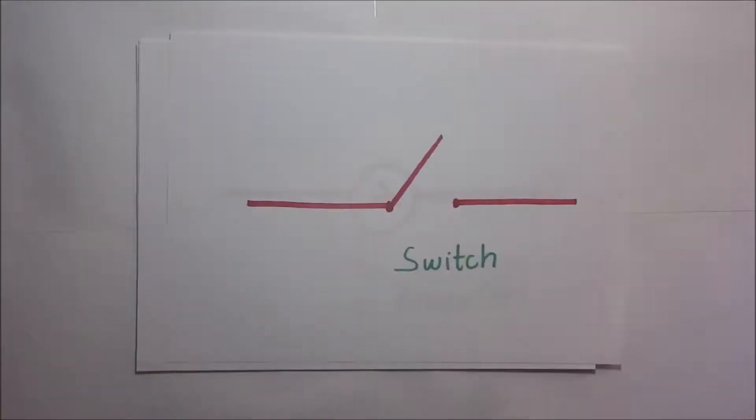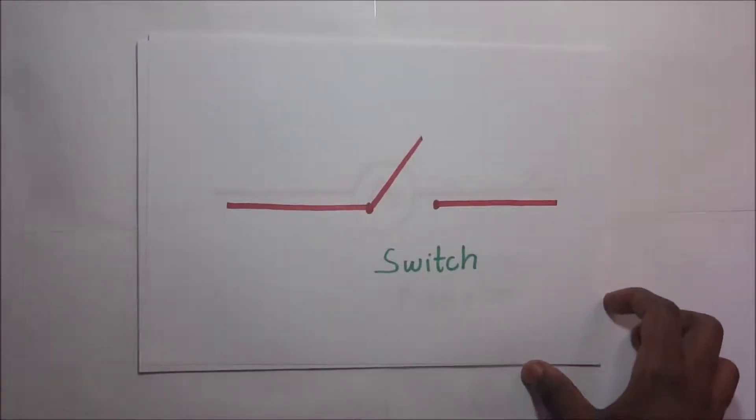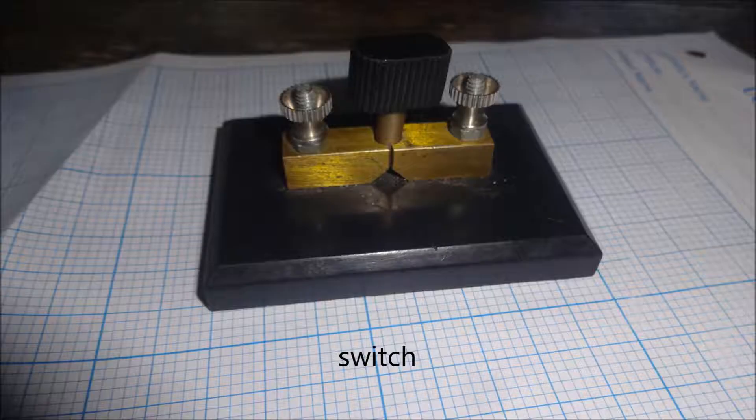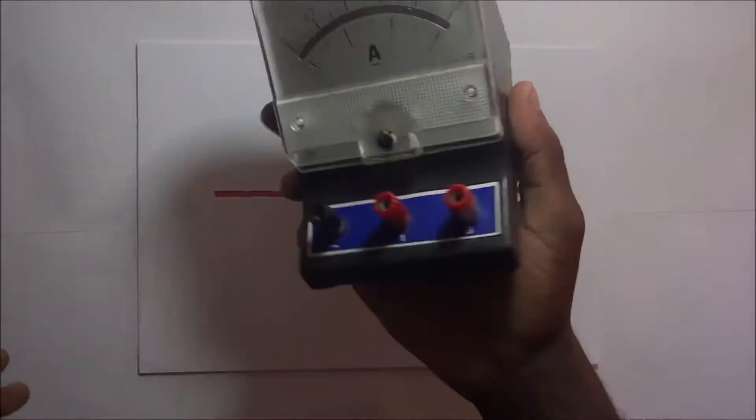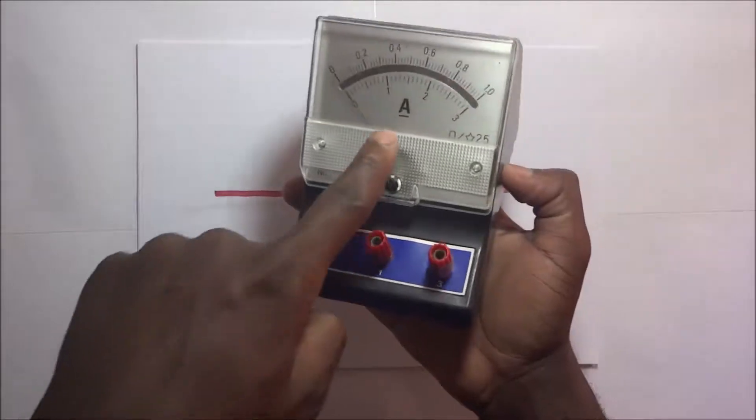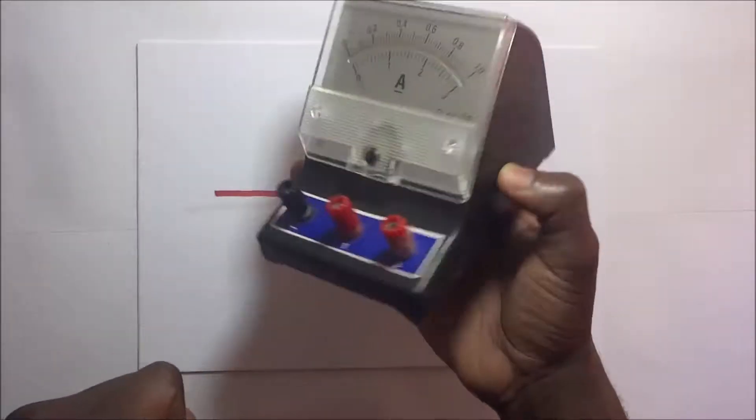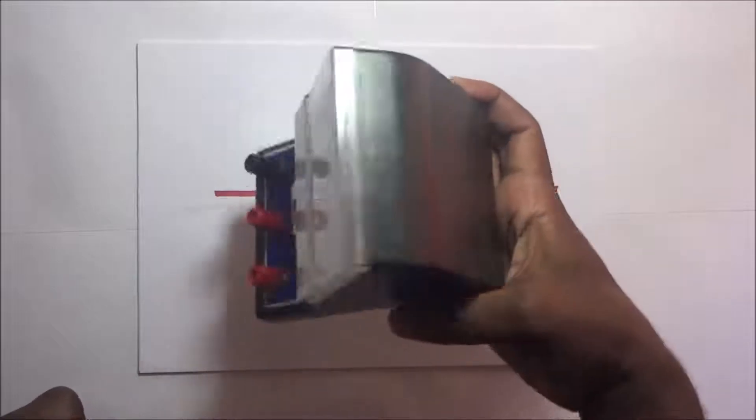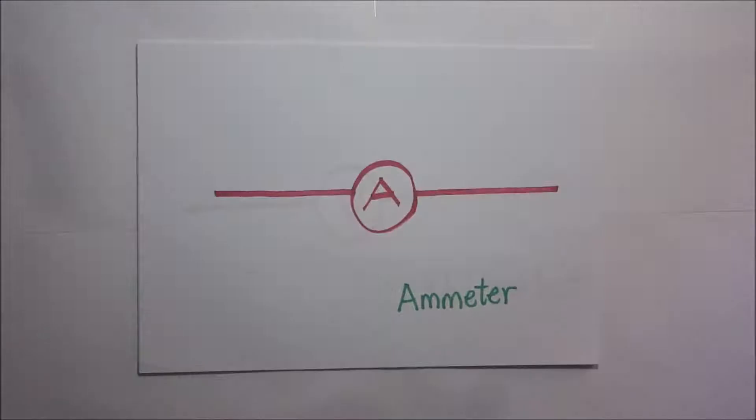That's how we represent the switch in a circuit diagram. That's the symbol for a switch. Then right there is an ammeter. This is how an ammeter looks like. It has that 'A' right there to show that it is an ammeter and it measures current. Instead of drawing this in our circuit diagrams, we simply draw this.